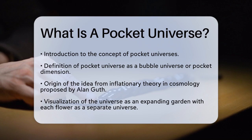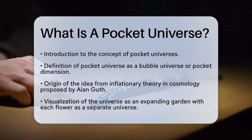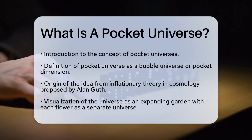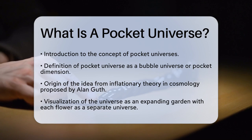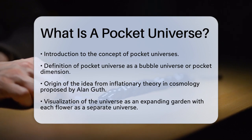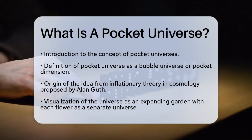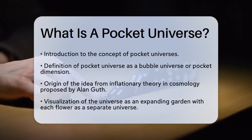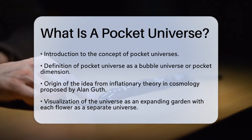A pocket universe, also known as a bubble universe or pocket dimension, is an idea that comes from inflationary theory in cosmology. This theory was proposed by Alan Guth, an astrophysicist who suggested that our observable universe might be just one of many inflationary zones.